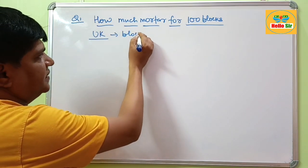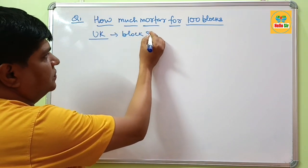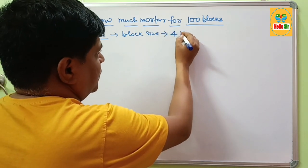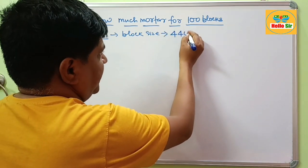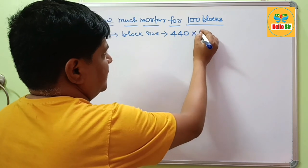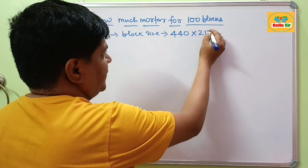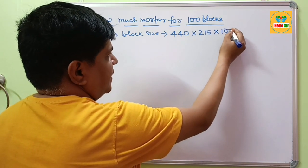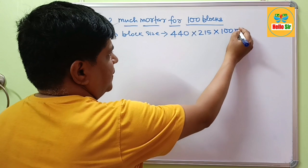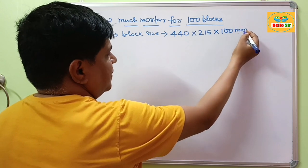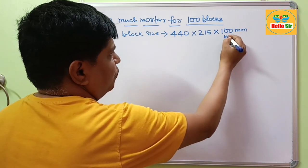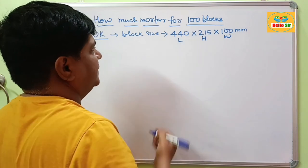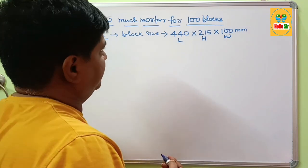the block size is about 440 mm in length, 250 mm in height and 100 mm in width. This dimension refers to the height and this one to the length.